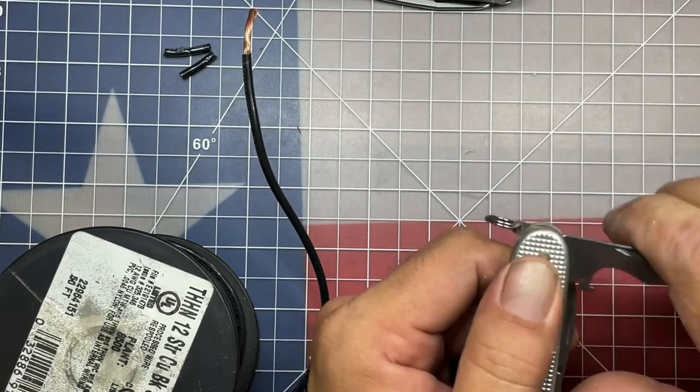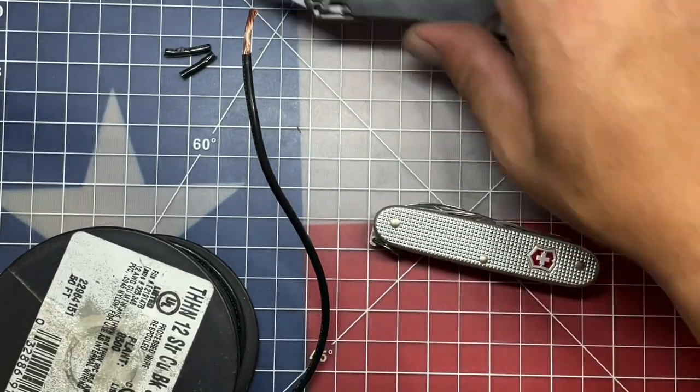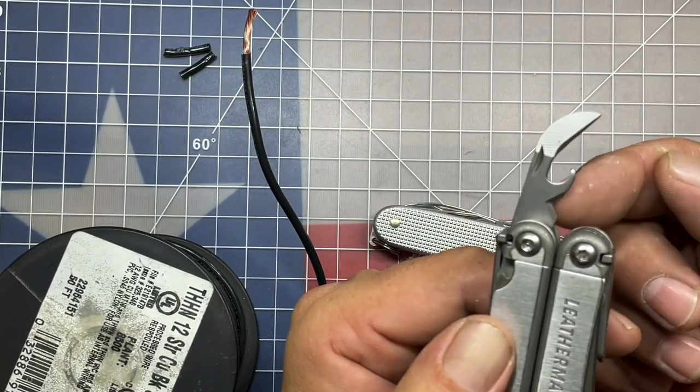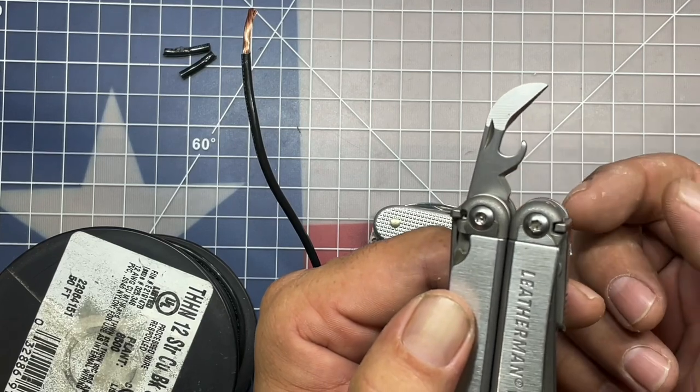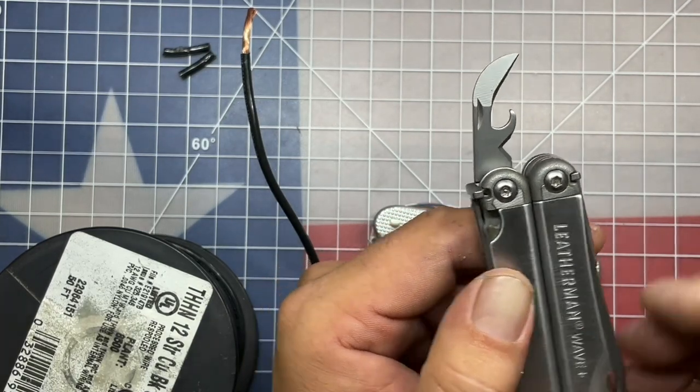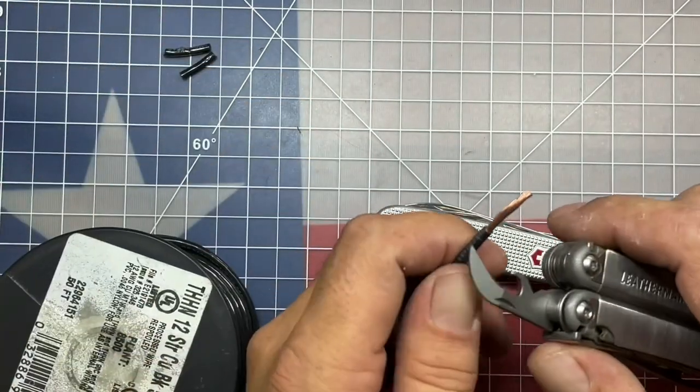And that makes perfect sense. Now with the Leatherman, because it has the V-notch in it, and it's sharpened to one side, it allows you the ability to both score and to pinch it in the same fashion as we did before.